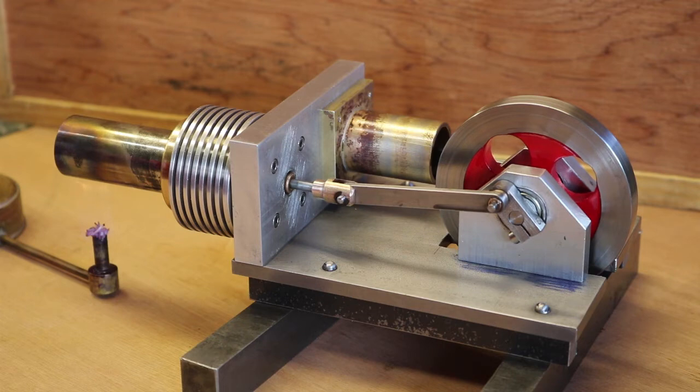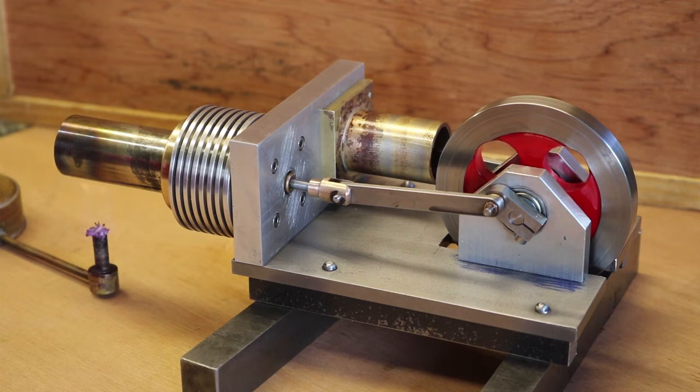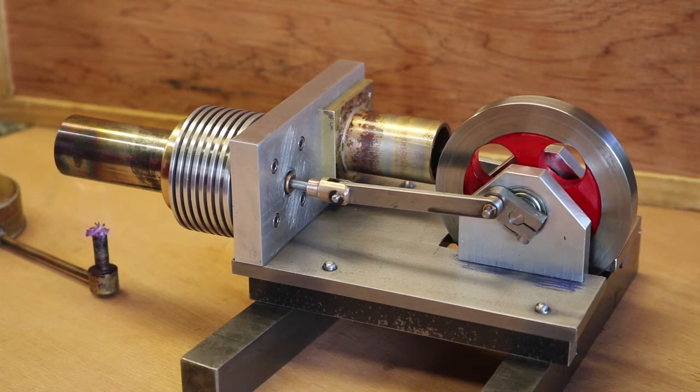With an engine like this that's all you need is a flame. Don't be tempted to put a blowtorch on it or a gas burner or anything like that. They don't need it. This one has got an aluminium displacer and it would be quite feasible that you could melt that displacer.